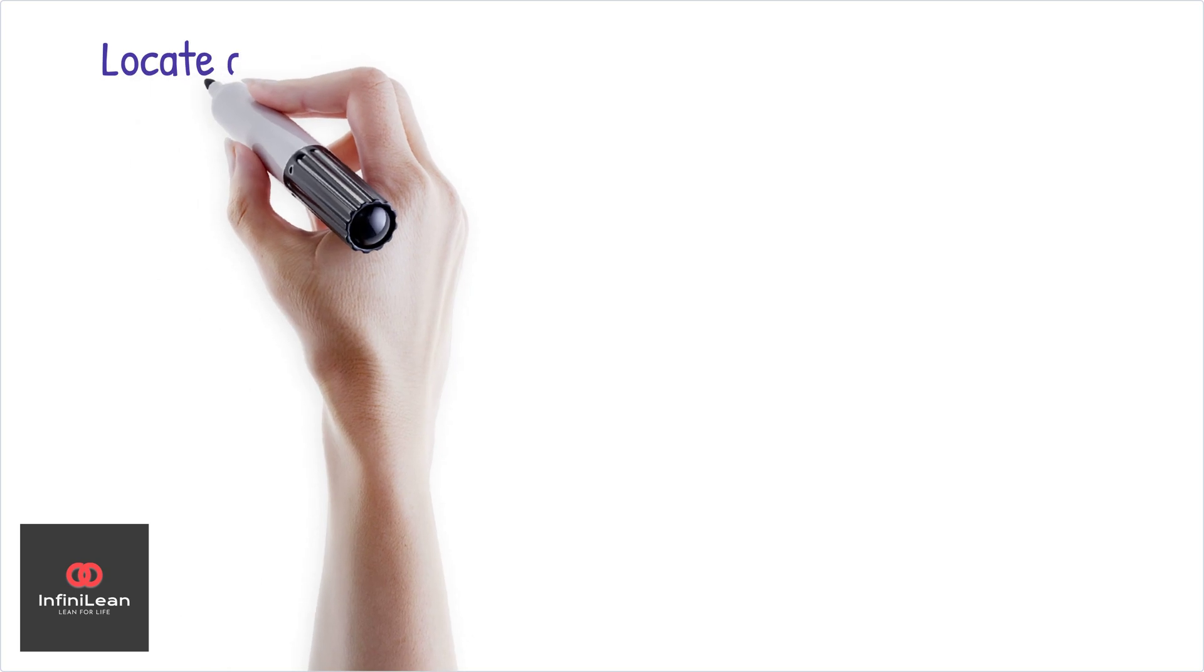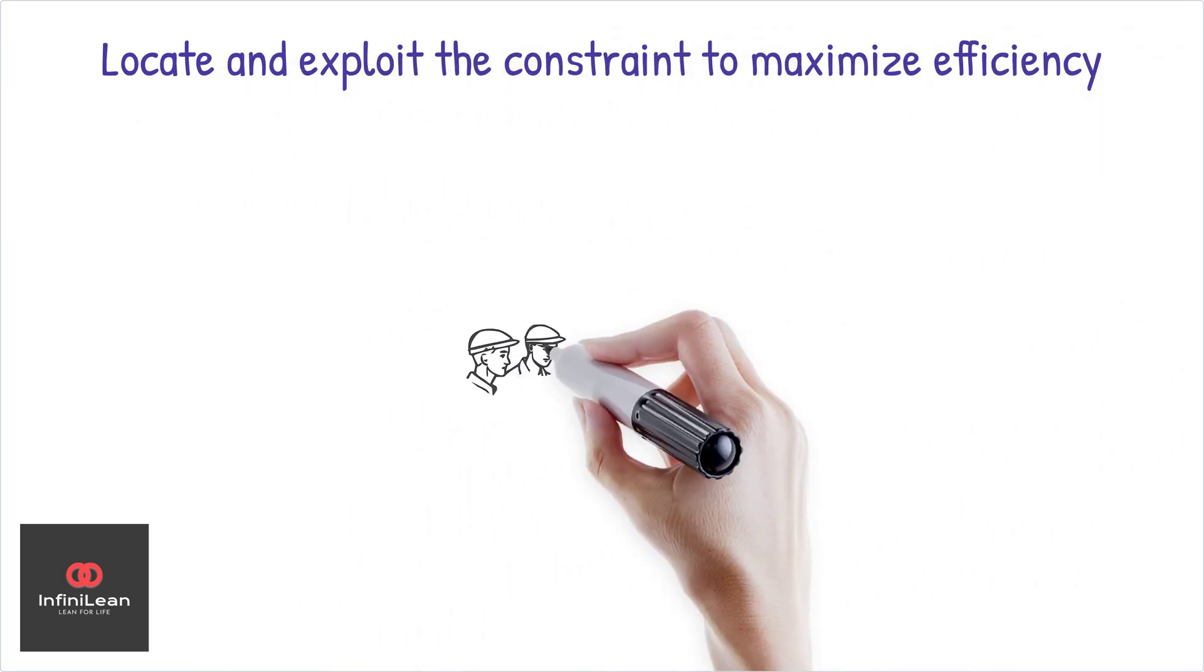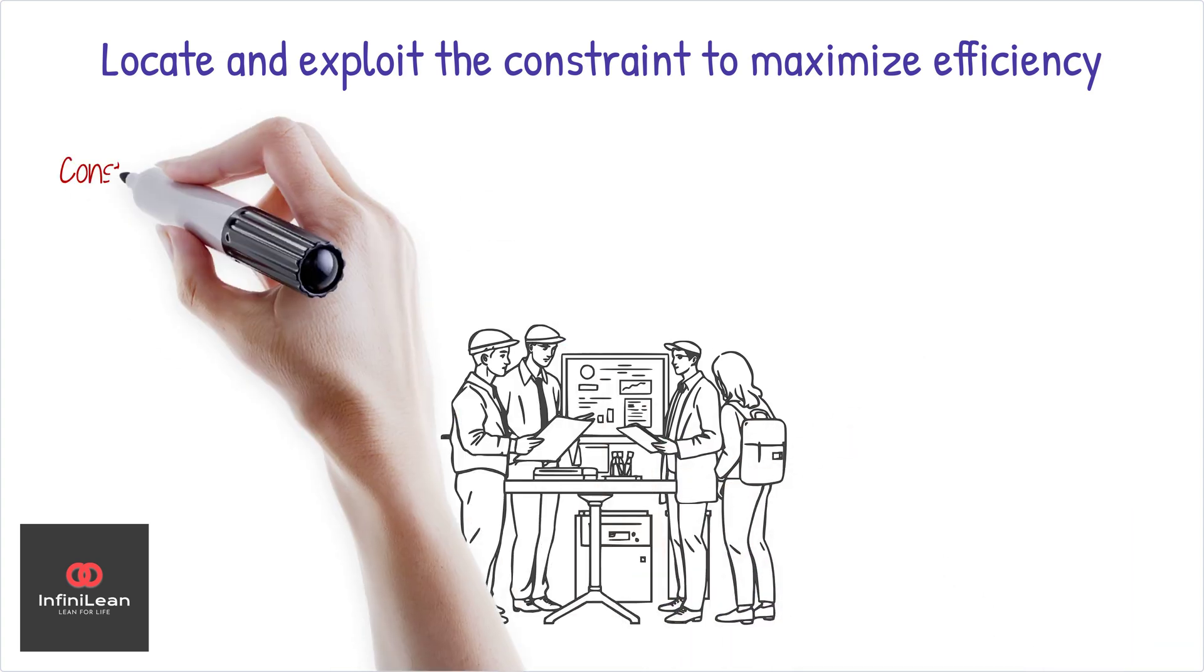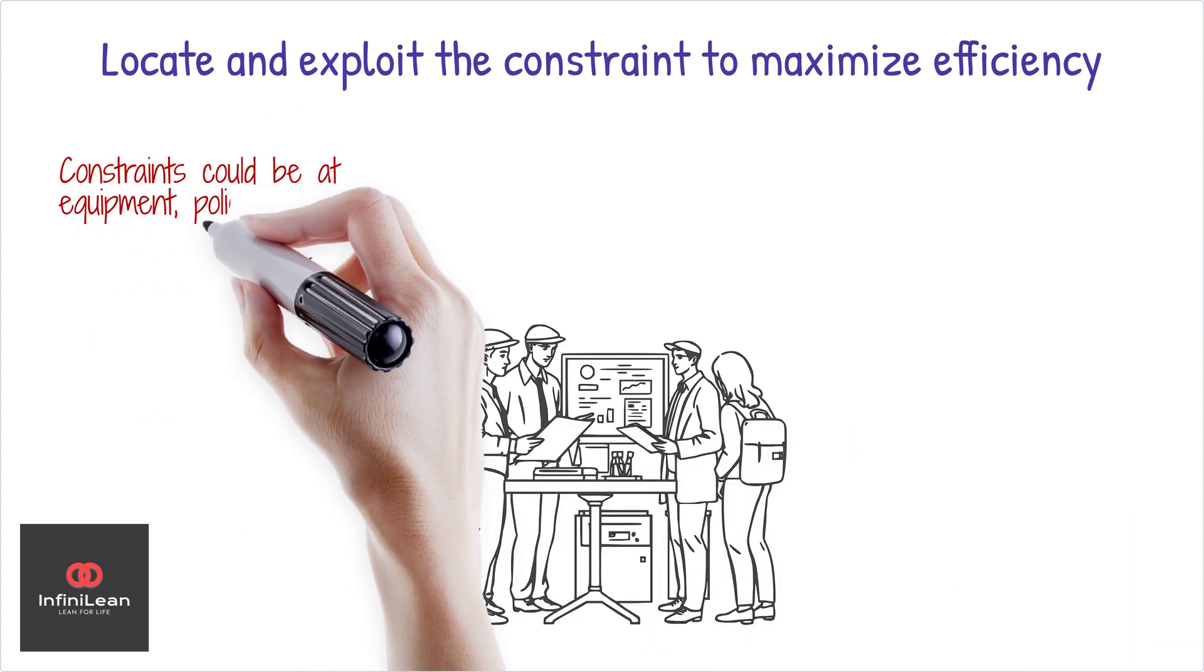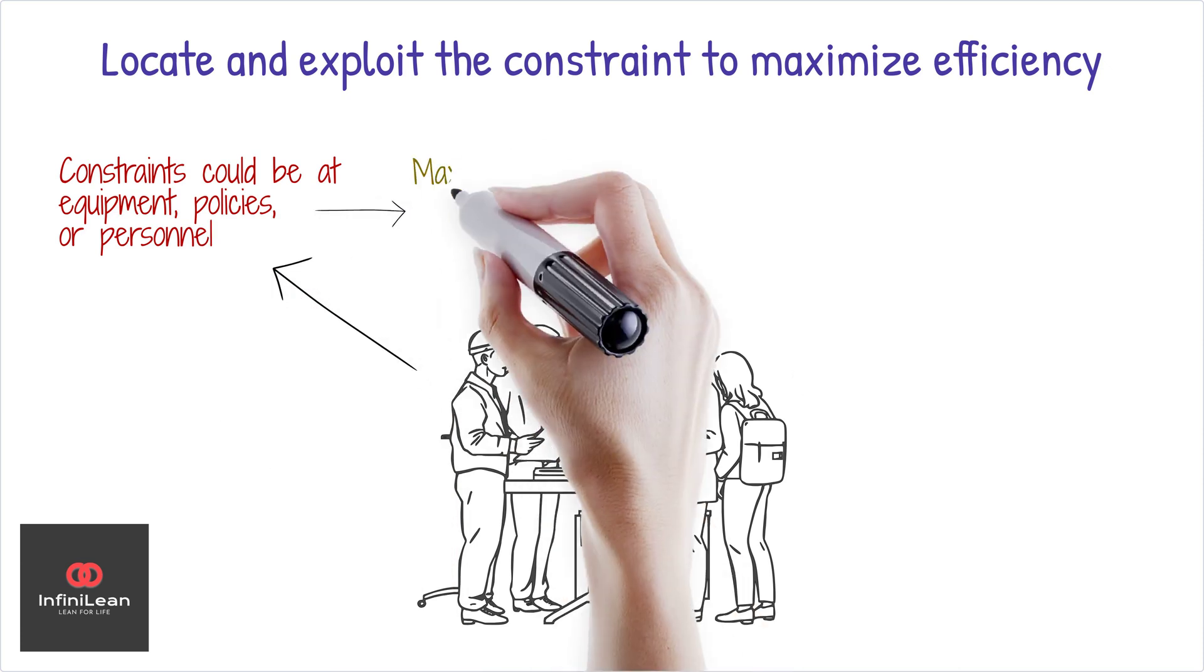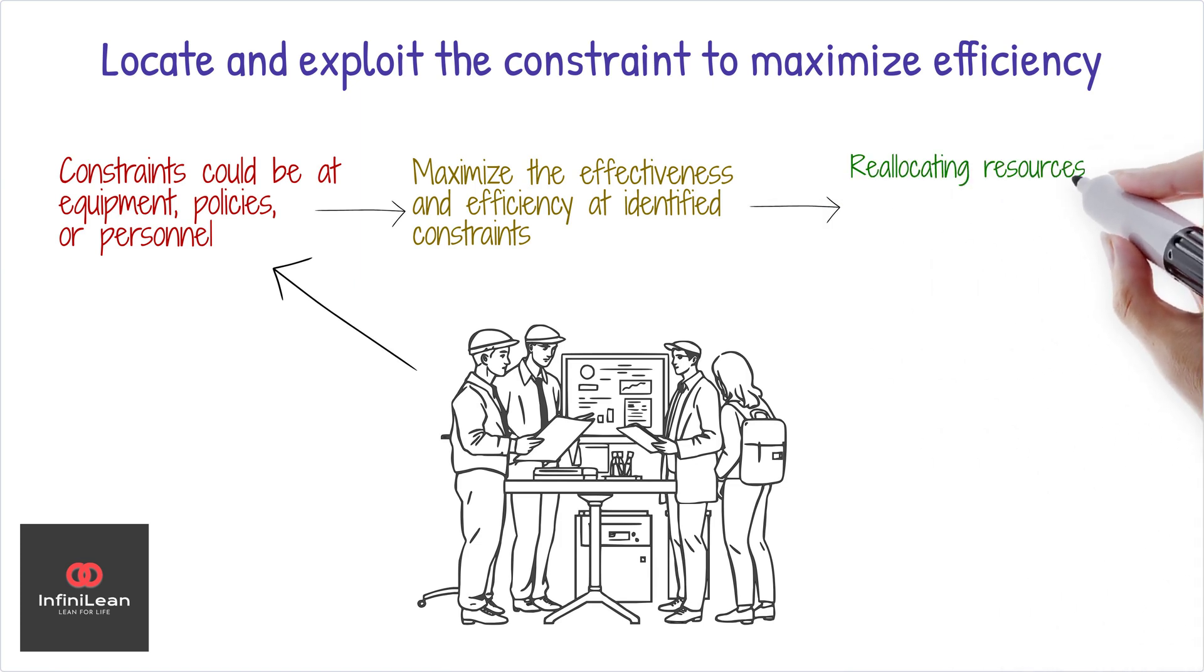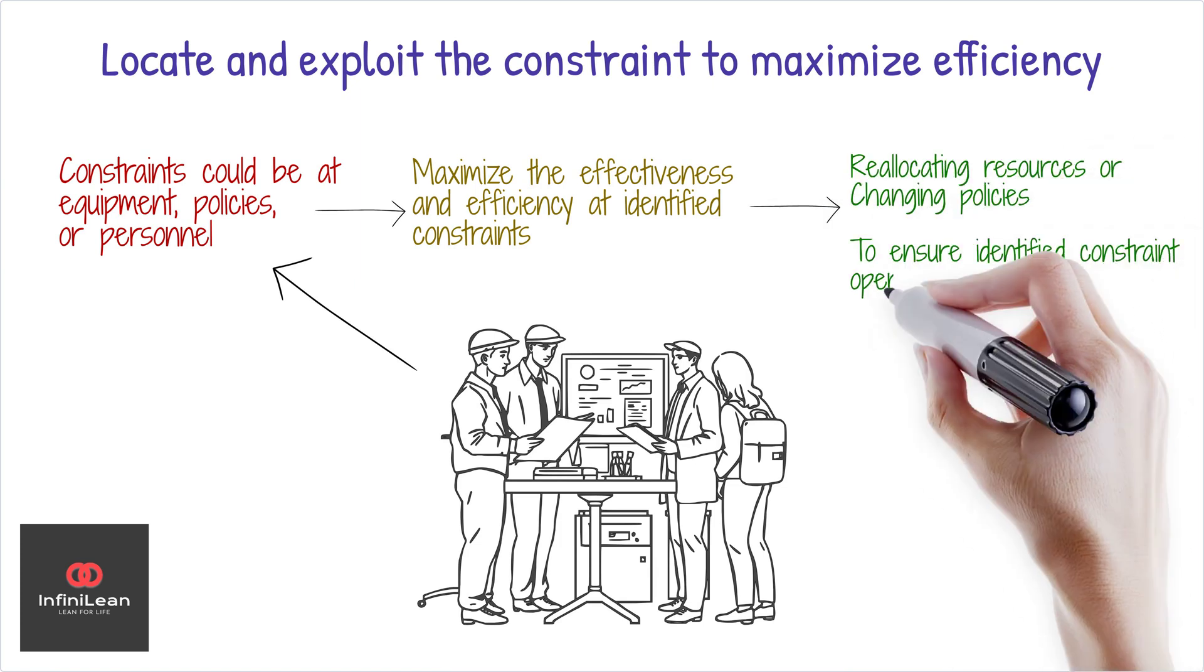The first step is to locate the constraint, which can be equipment, policies, or personnel. Once identified, deciding how to exploit the constraint is crucial to maximize its effectiveness and efficiency. This might involve reallocating resources or changing policies to ensure the constraint operates at its full capacity.